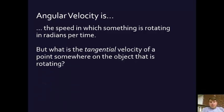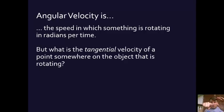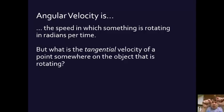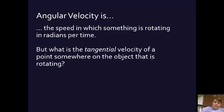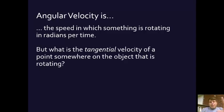But what about the tangential velocity? It's the velocity of a point somewhere on the object — say on the outside of the wheel. Because a small circle and a big circle may be moving at the same radians per second, but a point on the outer rim has to cover a whole lot more distance on the circumference of a big circle than on a little one.